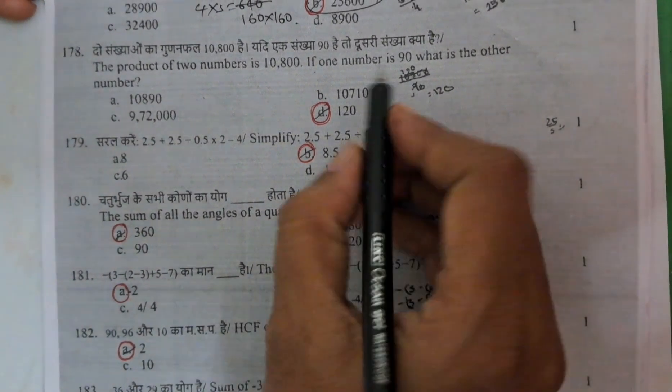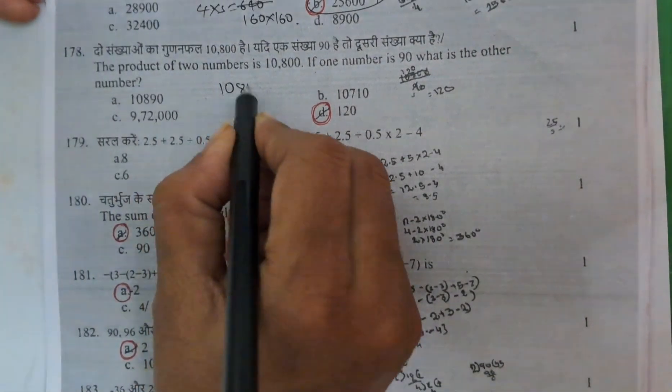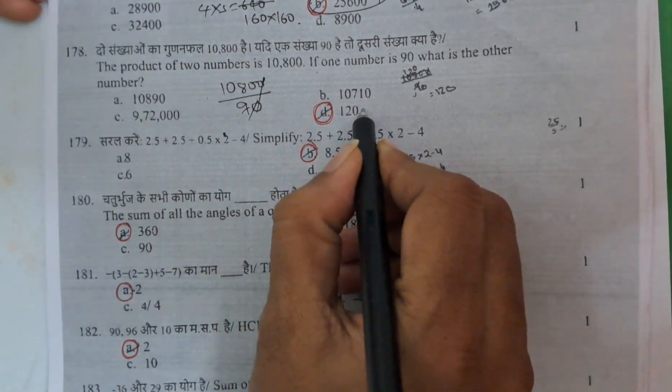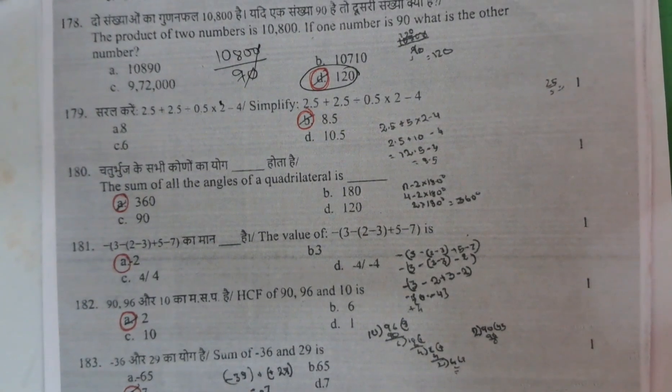And next here, the product of two numbers they gave, and one number they gave. Means you need to do the division. Means here, if you do division, you will get the answer 120.